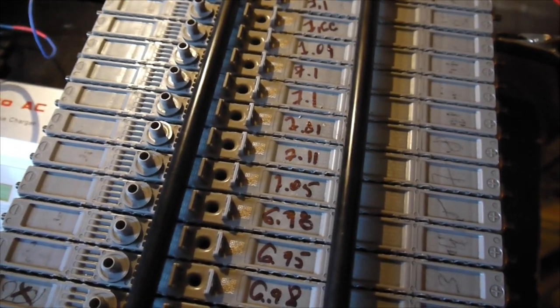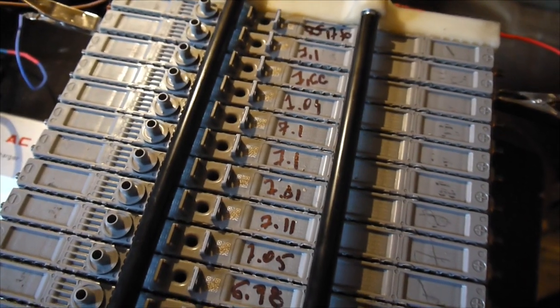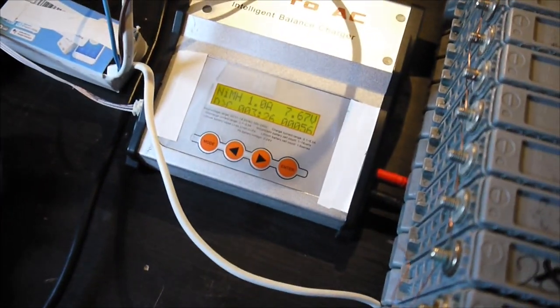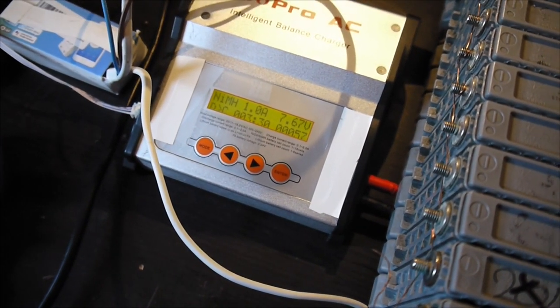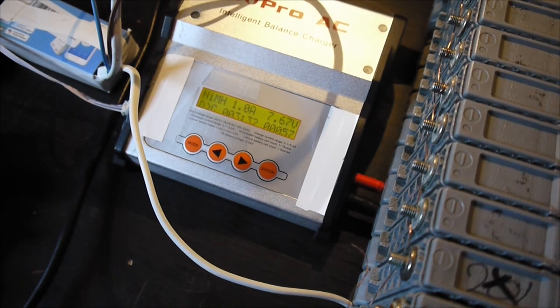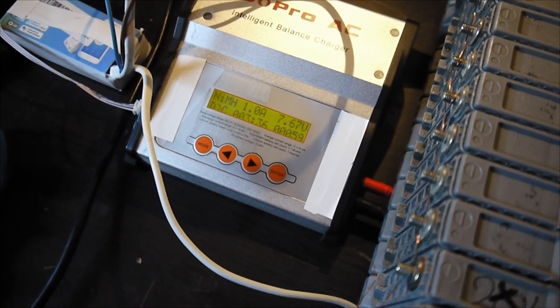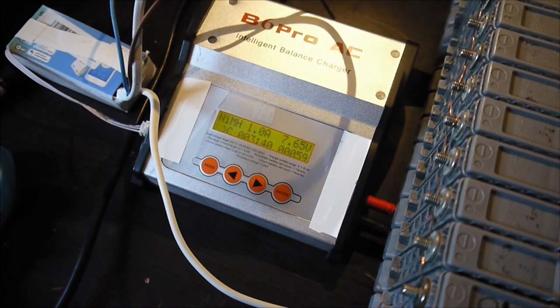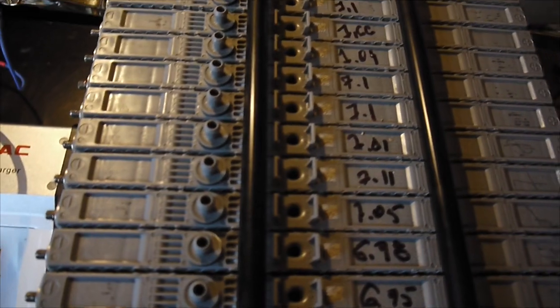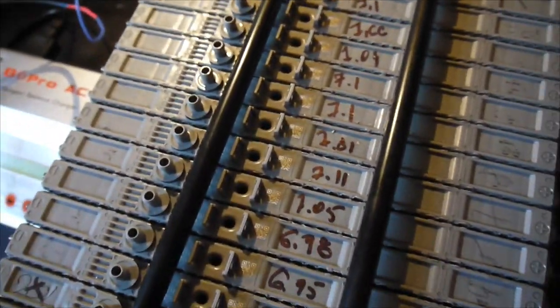Without the modified load, this process can take maybe one day or something because if you discharge with one amp, it takes a lot of time. Let's say if you have a good cell at least six amps like it should be, that means six hours for a discharging and that's a lot of time and it's really boring.